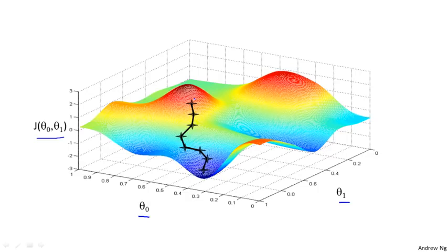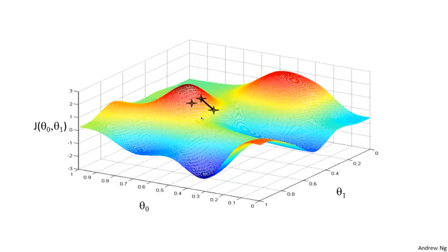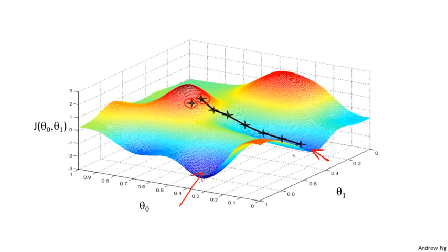Gradient descent has an interesting property. The first time we ran gradient descent, we were starting at this point over here. Now imagine we had initialized gradient descent at that point on the upper right. If you were to repeat this process — start from that point, look all around, take a little step in the direction of steepest descent — you would do that, then look around, take another step, and so on. And if you started just a couple steps to the right, gradient descent would have taken you to this second local optimum over on the right. So if you had started at this first point, you would have wound up at this local optimum, but if you started at a slightly different location, you would have wound up at a very different local optimum. And this is a property of gradient descent that we'll say a little bit more about later.